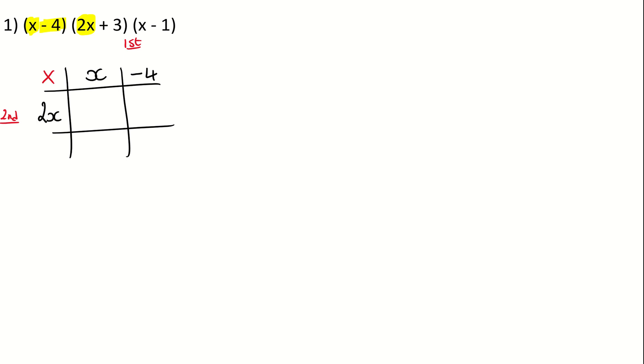The second term in the bracket is a negative four — the sign is really important — negative four. And then the second bracket: the first part is 2x, so I'm going to put it here. And the second part in the bracket is a plus three, a positive three, so I'm going to add it here.